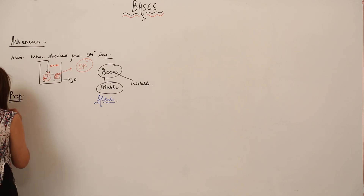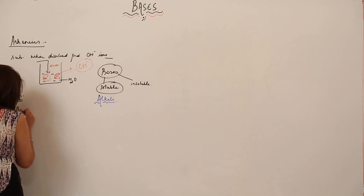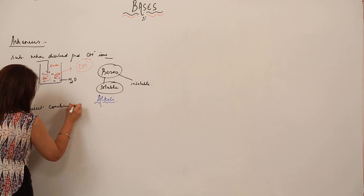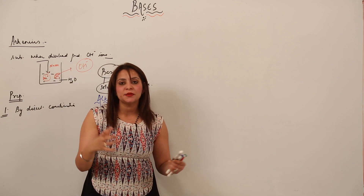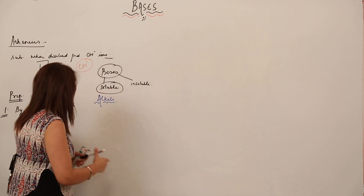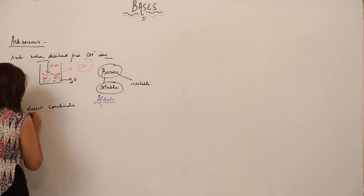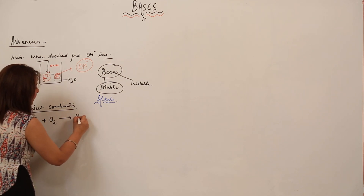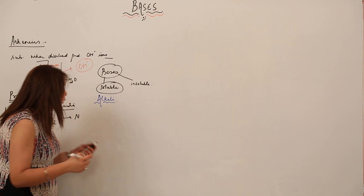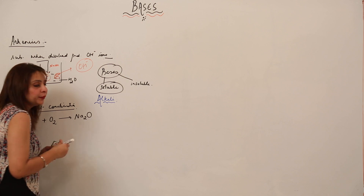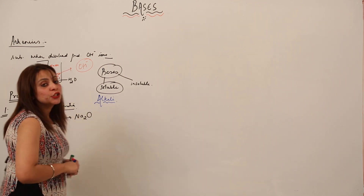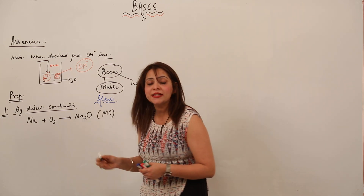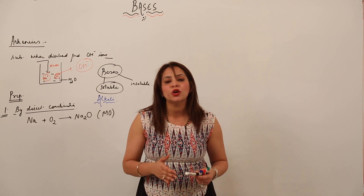The first method is by direct combination — directly combining substances which give rise to the base. For example, if we take sodium and add oxygen to it, any substance reacting with oxygen gives an oxide. So sodium forms sodium oxide (Na₂O), which is a metal oxide. All metal oxides except aluminium oxide and zinc oxide are basic in nature.